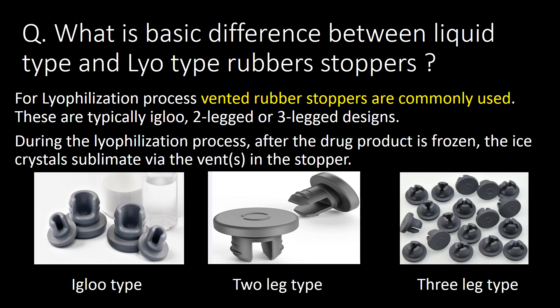What is the basic difference between liquid type and lyophilization type rubber stoppers? For the lyophilization process, vented rubber stoppers are commonly used. These are typically igloo, two-legged, or three-legged designs. During the lyophilization process, after the drug product is frozen, ice crystals sublimate via the vents in the stopper. You can refer to the photographs below of igloo type, two-legged type, and three-legged type designs.